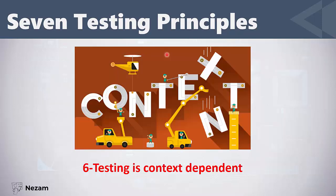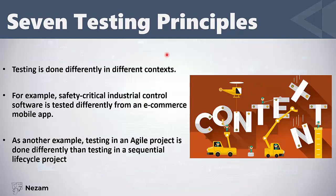Principle number six: testing is context dependent. Testing changes from one field to another and from one project to another. For example, safety-critical software is tested completely differently from e-commerce mobile apps, because in safety-critical software — such as in a hospital — someone may die because of a bug. In e-commerce apps, no one will die; we lose some money and the problem can be fixed. Similarly, testing in agile projects is done completely differently than in sequential lifecycle projects.